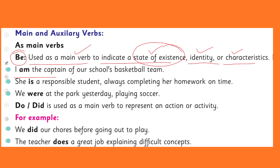For example, 'I am the captain of our school's basketball team.' 'Am' is a variation of the verb 'be', and it is showing the existence of you as the captain of the basketball team. 'She is a responsible student' — 'is' here shows the state of existence of the pronoun 'she' and also shows a characteristic. 'We were at the park yesterday playing soccer' — this is showing a state of existence in the past.